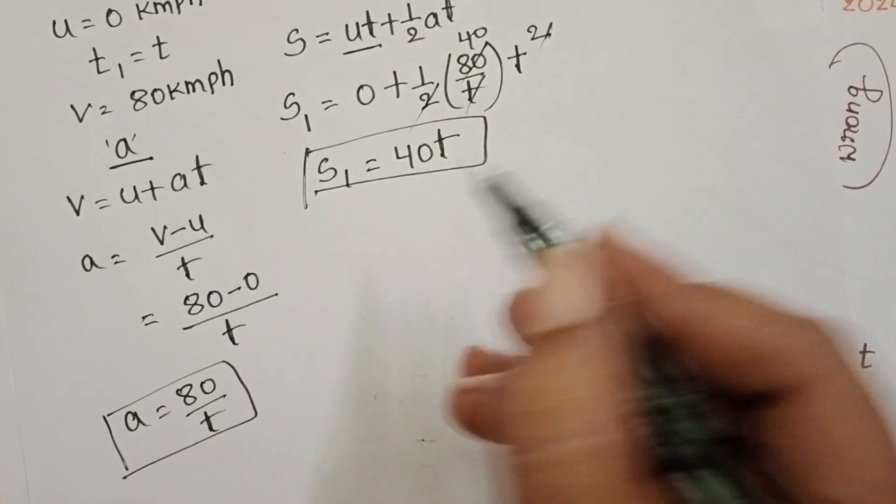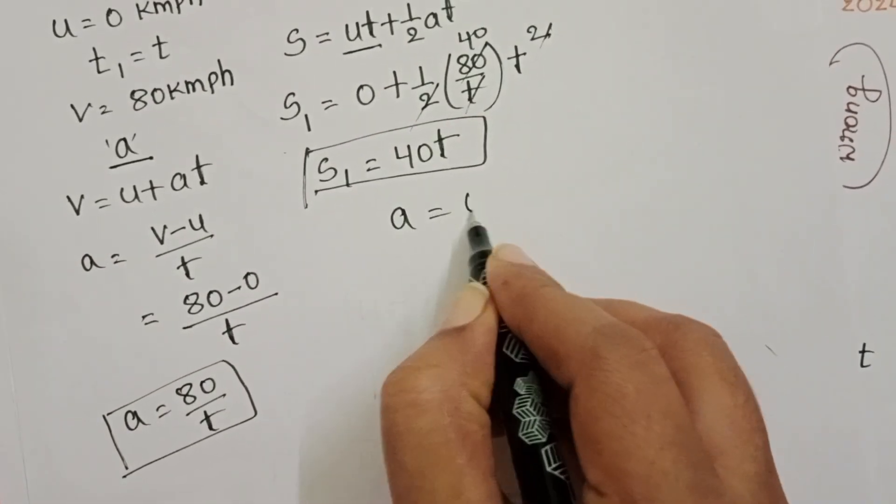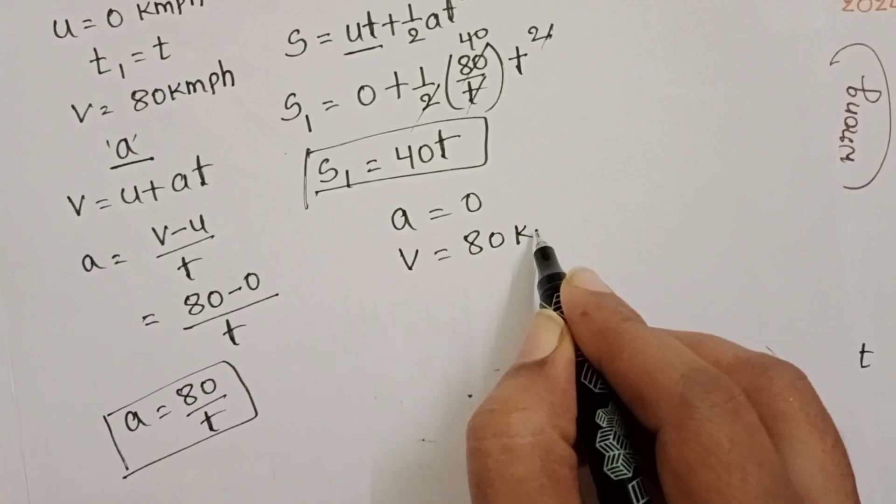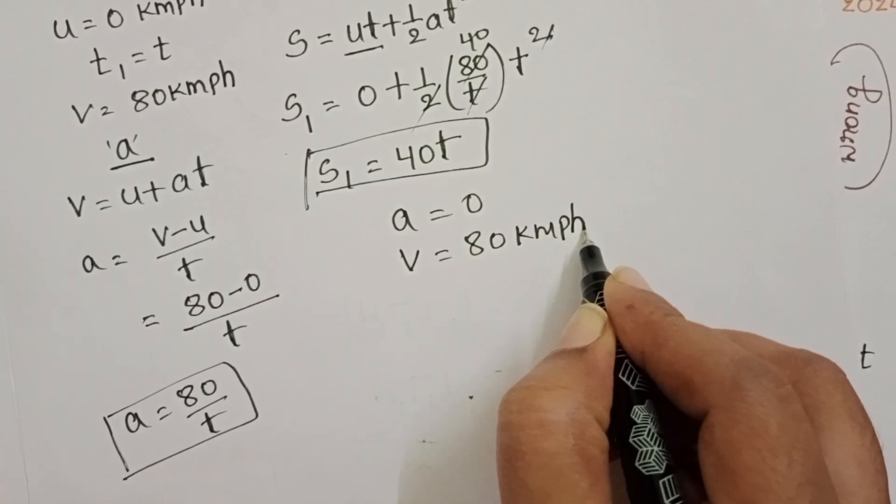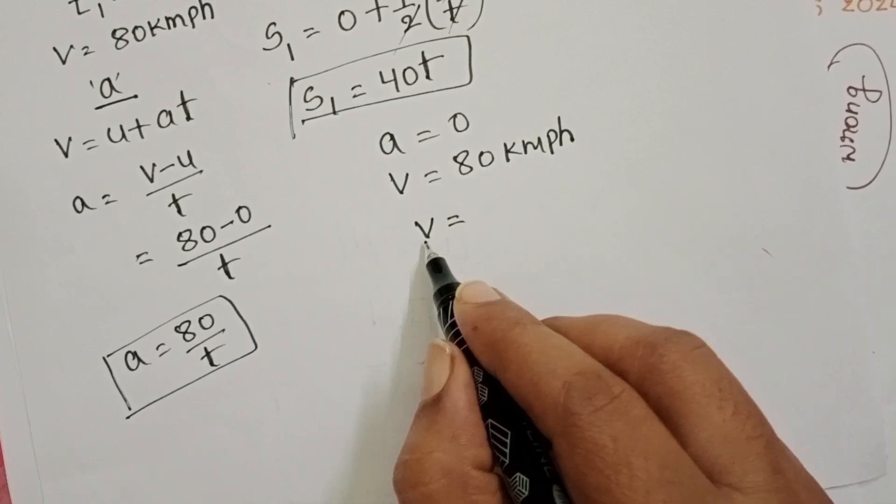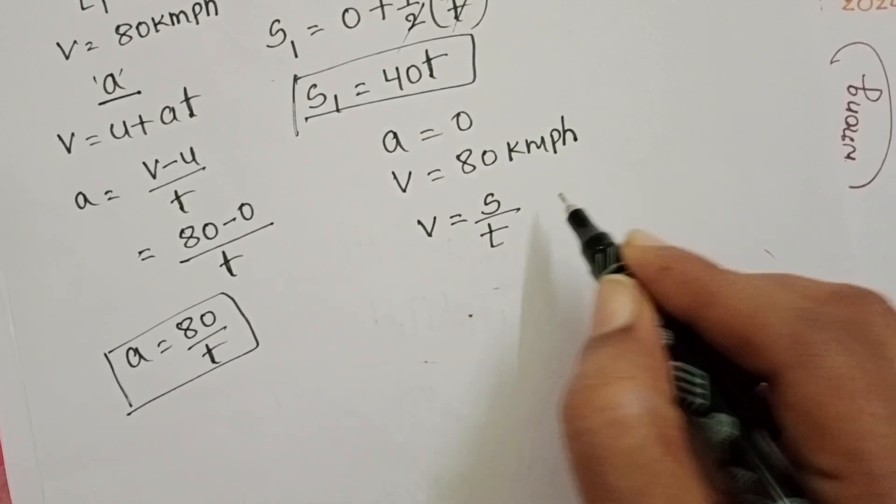After then what about the acceleration of the train? 0 and moving with constant speed that is 80 km per hour. So, don't take the equations of motion. Speed is equals to distance by time.